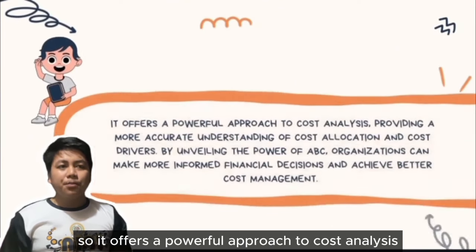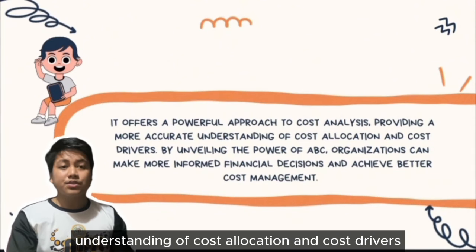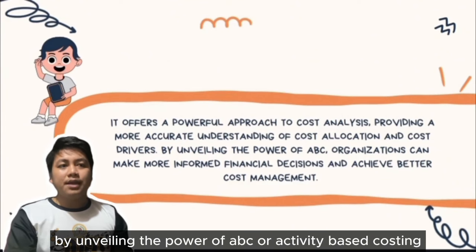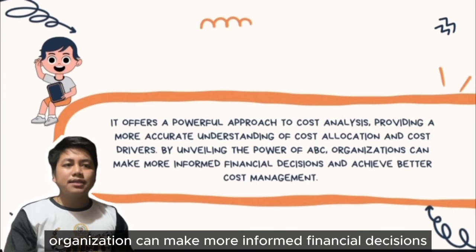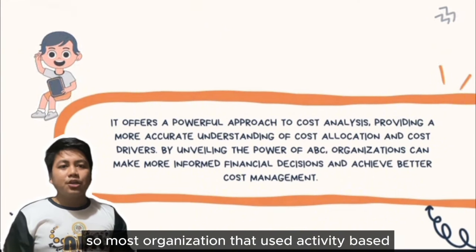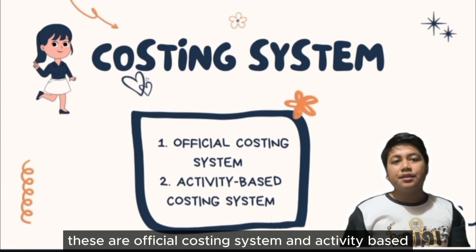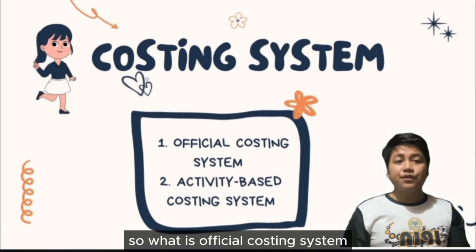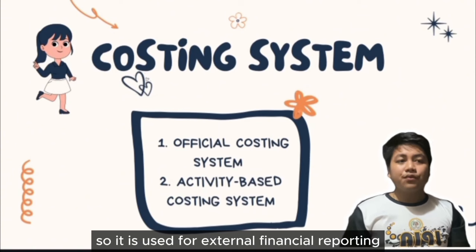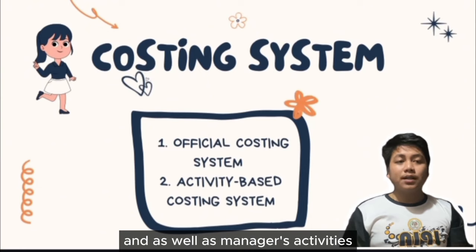Activity-Based Costing offers a powerful approach to cost analysis, providing a more accurate understanding of cost allocation and cost drivers. By unveiling the power of ABC, organizations can make more informed financial decisions and achieve better costing management. Most organizations that use Activity-Based Costing have two costing systems: the Official Costing System and the Activity-Based Costing System.